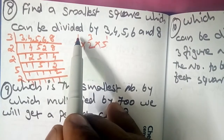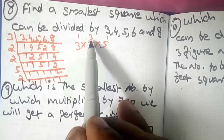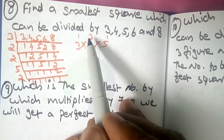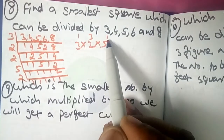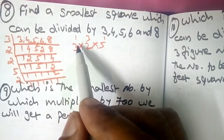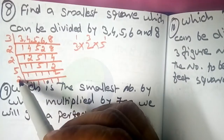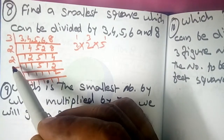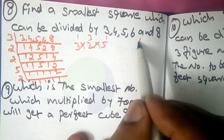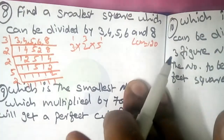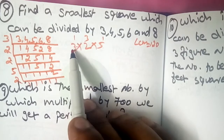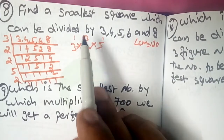This is 3 raised to 1 and 3 raised to 2. This is 4 raised, meaning 2 raised to 4. This is 5 raised to 2. That means we multiply: 3 raised to 2, 2 raised to 4, 5 raised to 2 — to make each prime factor appear an even number of times for a perfect square.